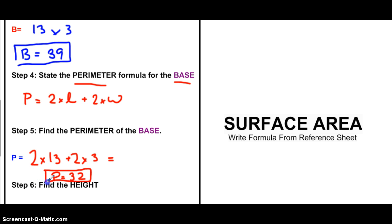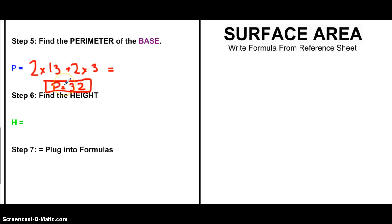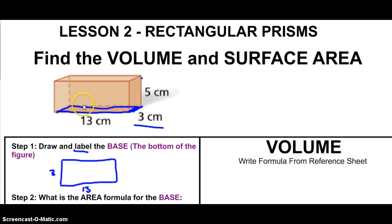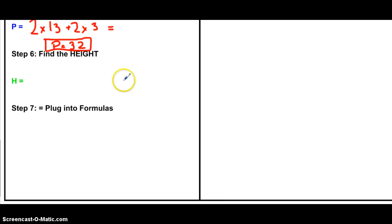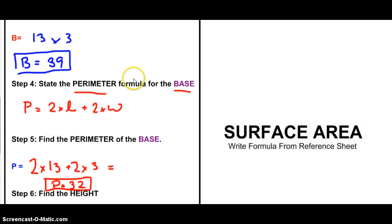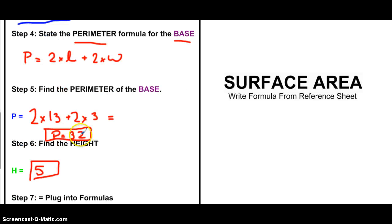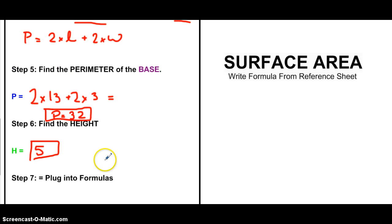I've got the perimeter now. We've got a perimeter and a base area. The last part is to find the height. Looking at our picture, remember the height is 5 — no calculating needed there. Now that I have my three variables — the area of the base, the perimeter, and the height — I'm good to go.